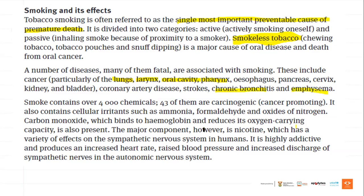Smoke contains over 4,000 chemicals. If you pass through smoke, you've been exposed to over 4,000 chemicals. 43 of them are carcinogenic — cancer-promoting. It also contains cellular irritants such as ammonia, formaldehyde, and oxides of nitrogen. Smoke contains many compounds that are not good for your health.